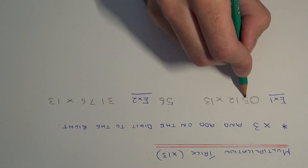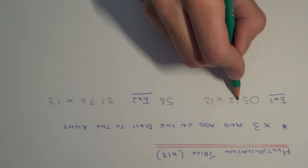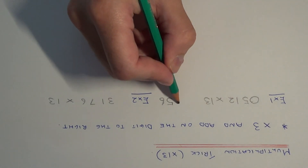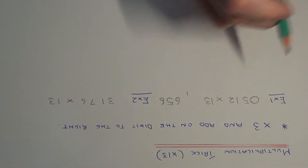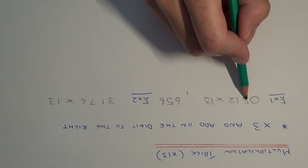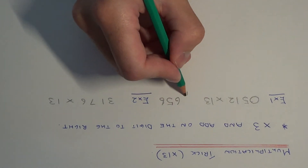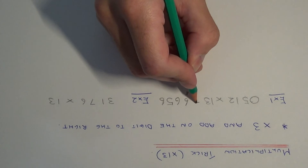We then move on to the 5: 5 times 3 is 15, add on the digit to the right, so we put the 6 at the end and carry the 1 into the next column. We then move on to the 0: 0 times 3 is nothing, add on the digit to the right — 0 add 5 is 5 — and we add on the 1 that we carried, which gives 6. So we get the answer 6,656.